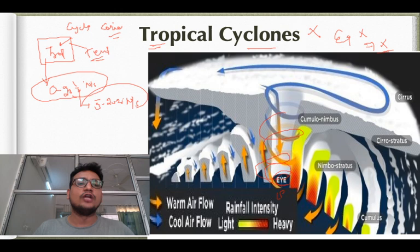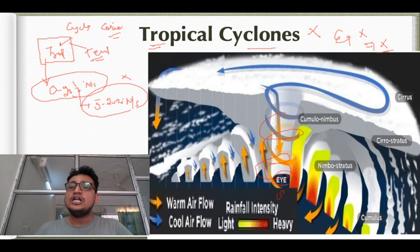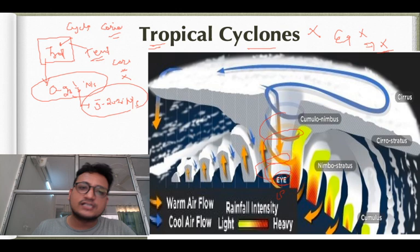Tropical cyclones nahi aate hai because of the absence of Coriolis force, and because of the absence of Coriolis force there will not be any kind of cyclic rotation. So jab bhi cyclic rotation ki baat aaygi, presence of Coriolis force is a must.